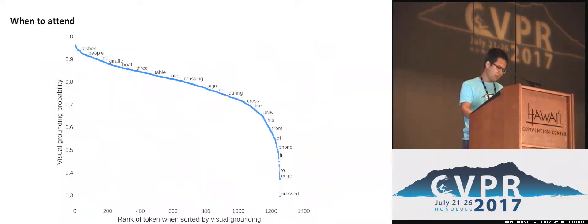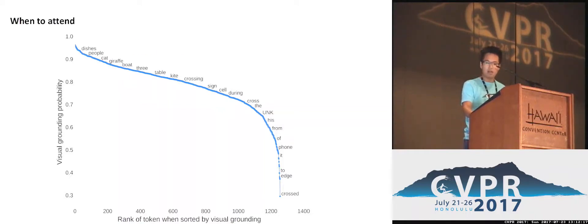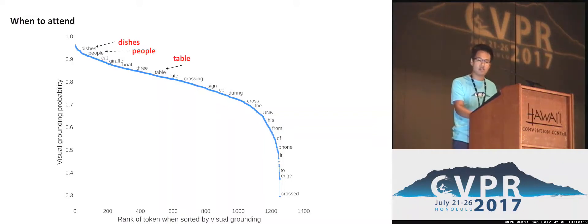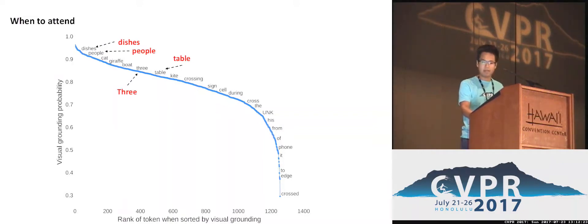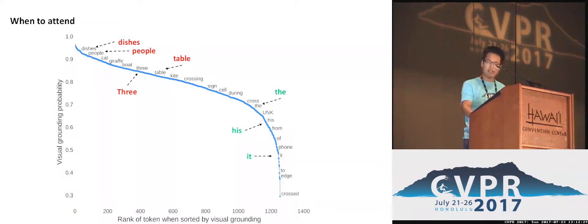This figure shows the rank probability plot on the COCO dataset. The vertical axis is the visual grounding probability, which defines how much the model looks at the image when generating words. We find that our model generally attends more on concrete objects such as dishes, people, and table, as well as numbers such as three. Our model attends less on article words such as 'the' and 'a,' pronoun words such as 'his' and 'it,' and words with strong language correlations, such as 'phone.'